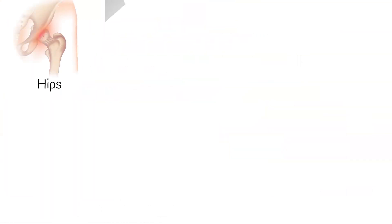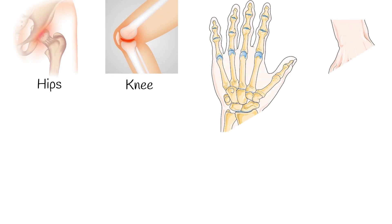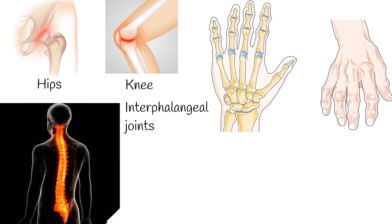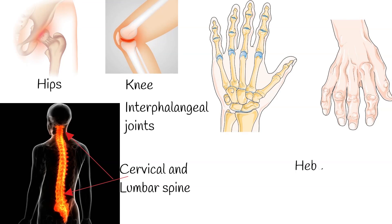Osteoarthritis typically affects the hips, knees, interphalangeal joints, and joints of the lower cervical and lumbar spine. There is enlargement and swelling at the site of bone junctions. Classic physical exam findings in hand osteoarthritis include Heberden's nodes.